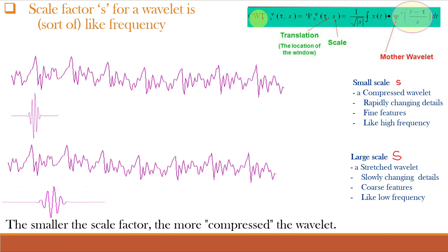Since we are dealing with digital images, which are discrete, we use Discrete Wavelet Transform rather than Continuous Wavelet Transform. What distinguishes CWT from DWT is the set of scales and positions at which it operates. Unlike DWT, the CWT can operate at every scale and is continuous in terms of shifting. However, calculating Wavelet coefficients at every possible scale generates a lot of data. For DWT, we choose scales and positions based on powers of 2, called dyadic scales and positions, making analysis very efficient and accurate.